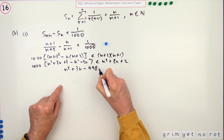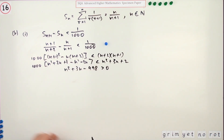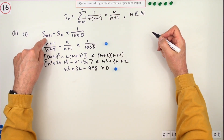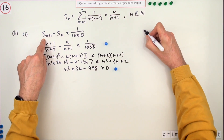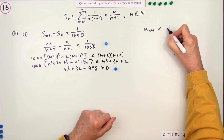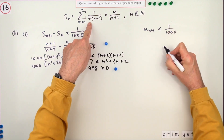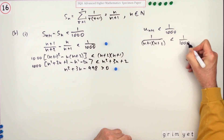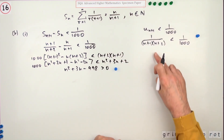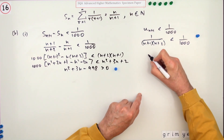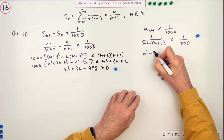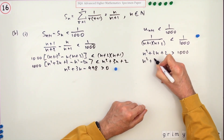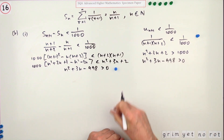That result is worth a mark. Alternatively — and more simply — S(n+1) − S(n) is just the extra term U(n+1), which equals 1 over (n+1)(n+2), and that must be less than 1/1000. Cross-multiplying gives n² + 3n + 2 > 1000, i.e. n² + 3n − 998 > 0. That's the easier approach and would have got the same marks.